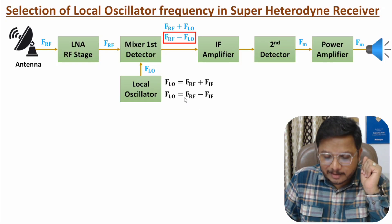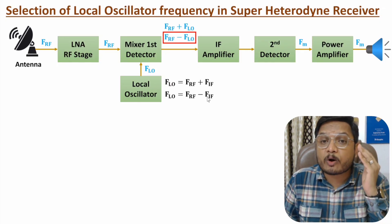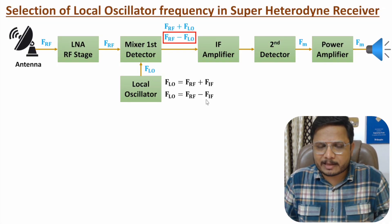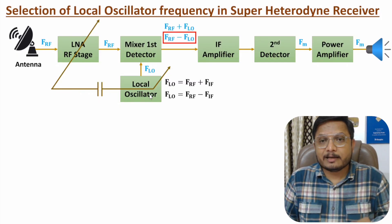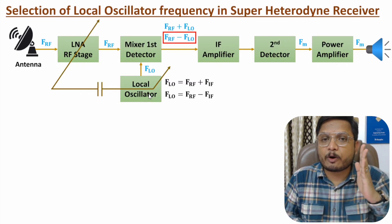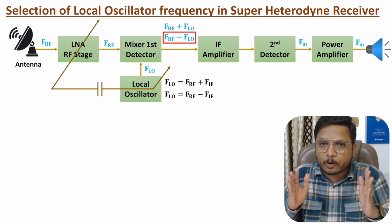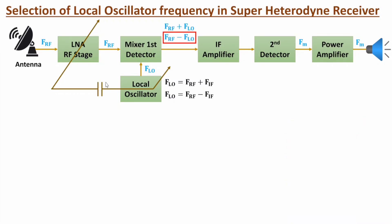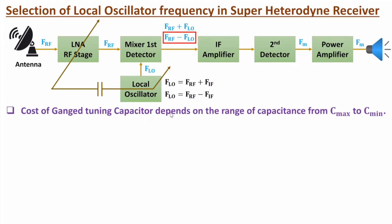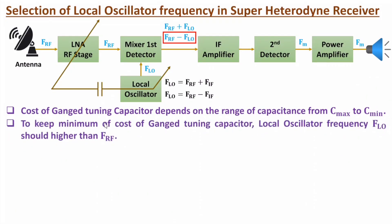Here we have a ganged tuning capacitor with a range of capacitance from maximum to minimum. If this range is more, then the cost of the capacitor is more. What we want is a lower cost ganged tuning capacitor. The cost of the ganged tuning capacitor depends on the range of capacitance from C_max to C_min. If this range is high, then the cost of the circuit is high. So we want minimum cost of the ganged tuning capacitor, which means we want minimum range.